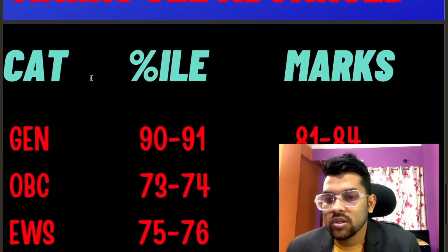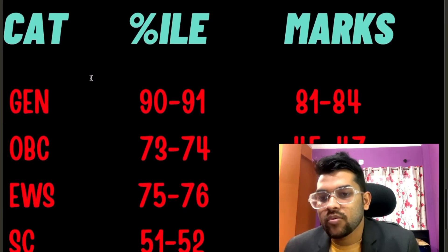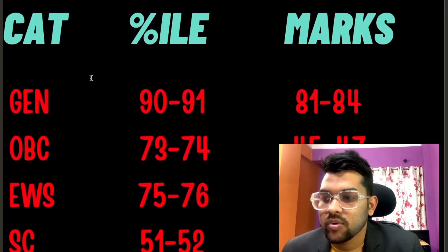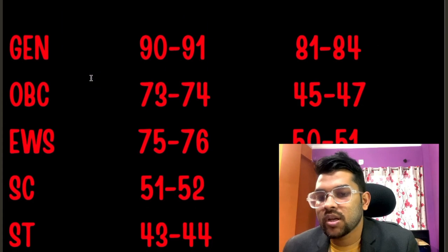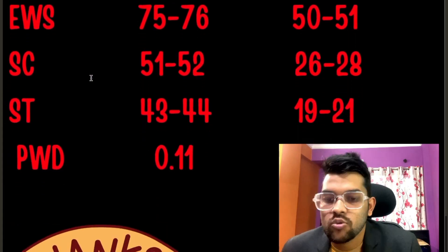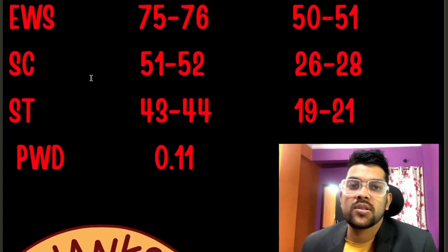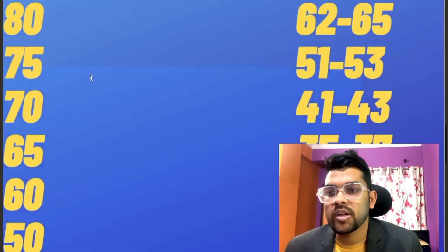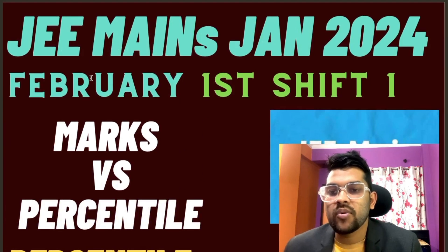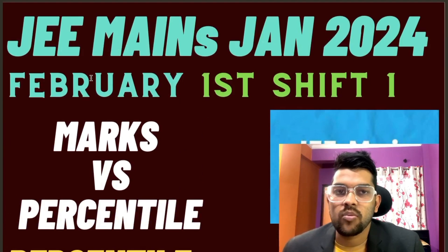Now talking about the cutoff marks for JEE Advanced qualification: General category 81 to 84, OBC 45 to 47, EWS 50 to 51, SC 26 to 28, ST 19 to 21, and for PwD — if you have reached the center, you are qualified for the Advanced exam, it's as simple as that. This was the complete information regarding the February first shift marks versus percentile and cutoff marks for JEE Advanced qualification. Thank you.